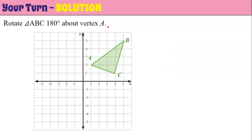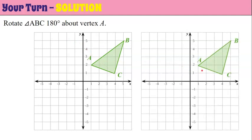Welcome back. Here is our original triangle ABC and we're going to rotate it about vertex A right here, so that's going to be 180 degrees around this vertex A. 180 degrees is going to be two turns.